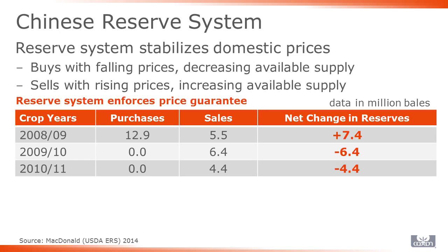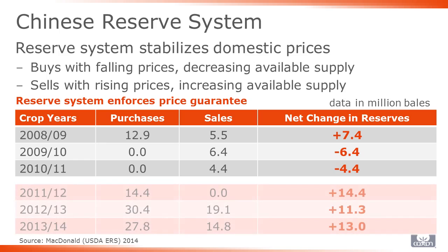Since the spike in fiber prices, the reserve system has taken on a new role as the mechanism that enforces the price guaranteed by the Chinese government. The price that was promised to growers in the spring of 2011 was high relative to historic averages and has been maintained or increased every year since. As world prices returned to levels similar to those experienced prior to the spike, a record separation emerged between Chinese prices and world prices. This separation made it more profitable for cotton to be sold to the reserve system than on the open market.